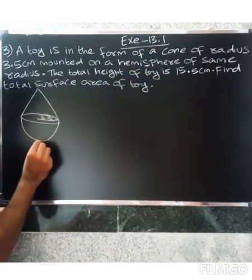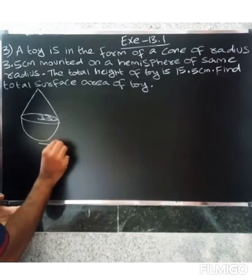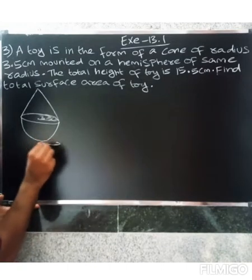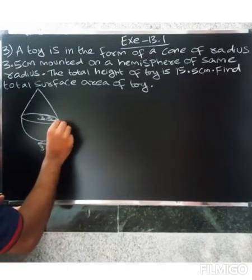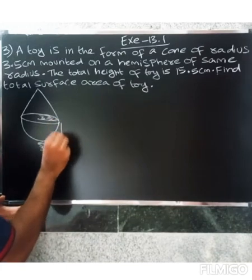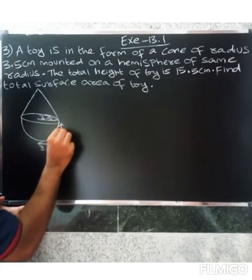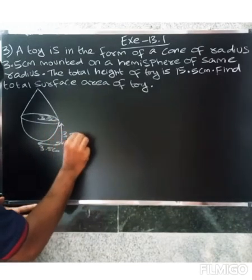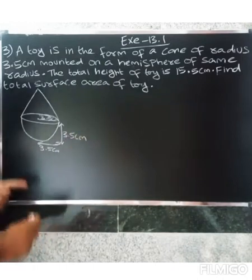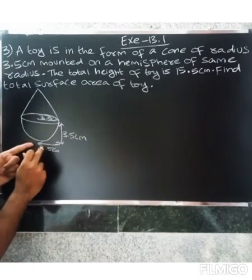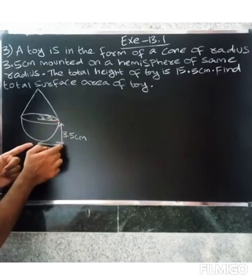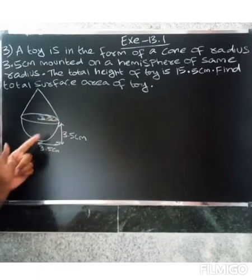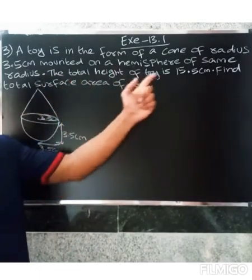The cone and hemisphere have the same radius of 3.5 centimeters. So the radius of both the cone and the hemisphere is 3.5 centimeters.